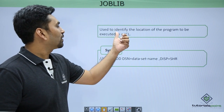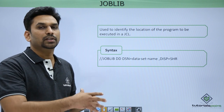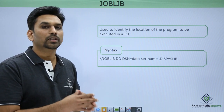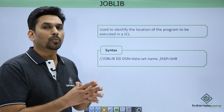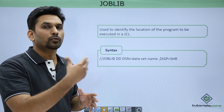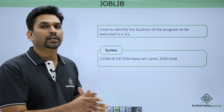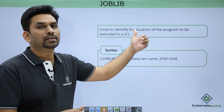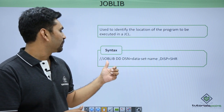At job level we can mention the location where our program load is present. It will be at the job level. Whenever a step is trying to find a program and it is not there, then it will go to the job level and it will search in this library.